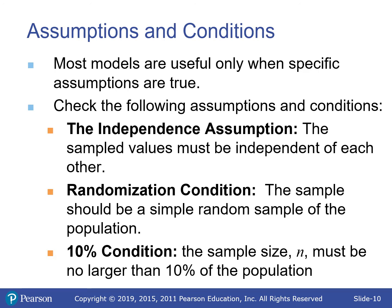The conditions are: independence — each value must be independent of the others; randomization — the sample must be an SRS (simple random sample), like drawing names from a hat where every group has an equal chance; and the 10% condition — sample size must be no bigger than 10% of the population.